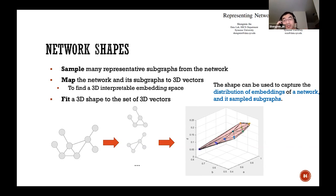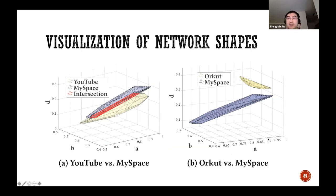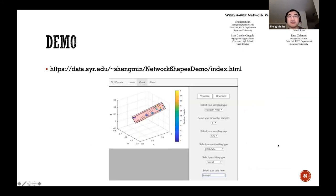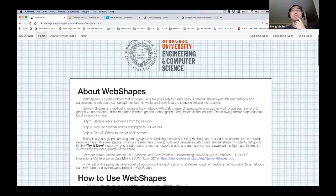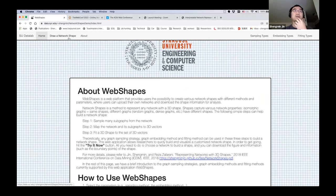Here are examples: network shapes of YouTube, MySpace, and Awkward. Different network shapes have different volumes — MySpace is larger and Awkward is smaller. Different shapes are located differently, and some overlap like YouTube and MySpace while others don't. Since the embedding space is interpretable, the location of a shape tells you the network's properties and the volume indicates variance of subgraphs. We also built a web portal for users to draw a network shape — you simply click 'draw a network shape'.